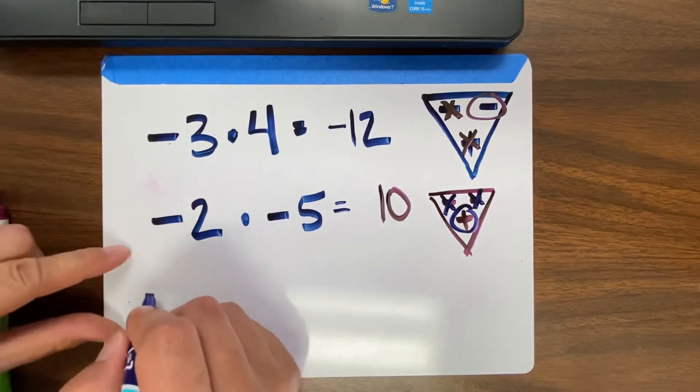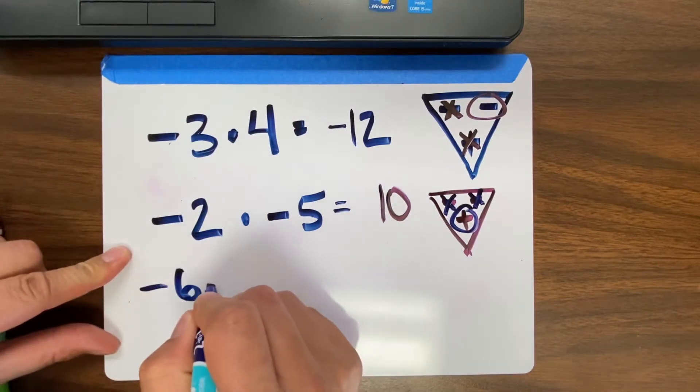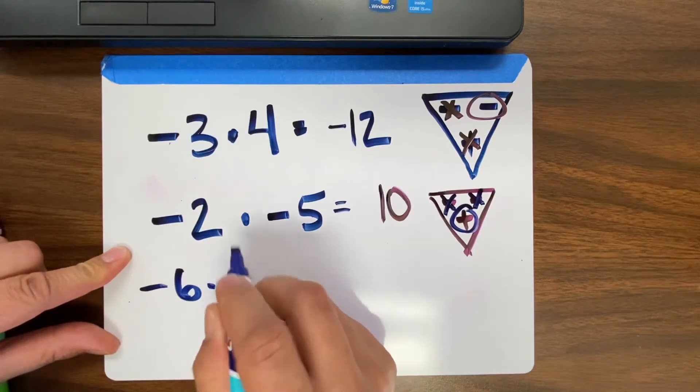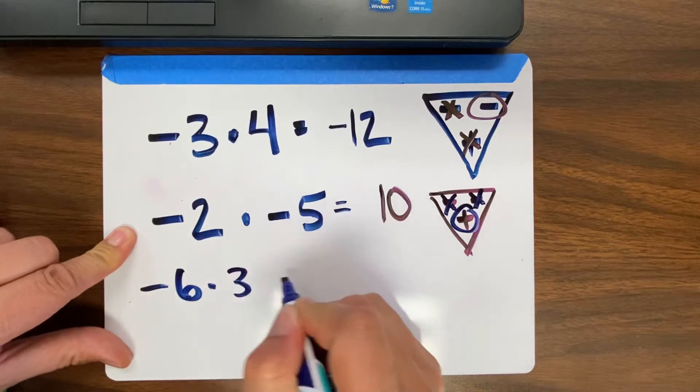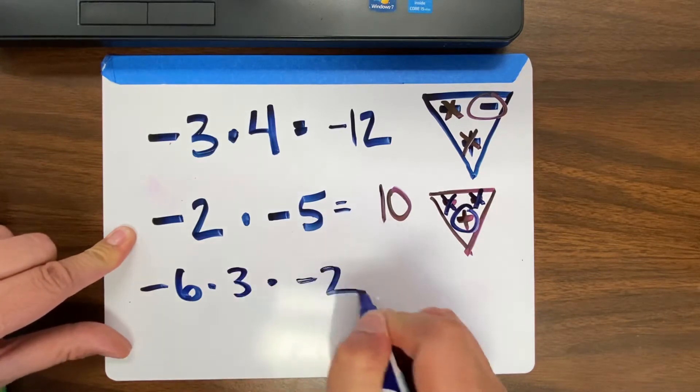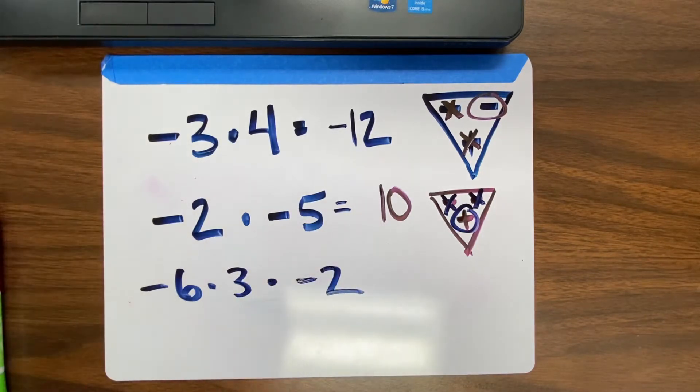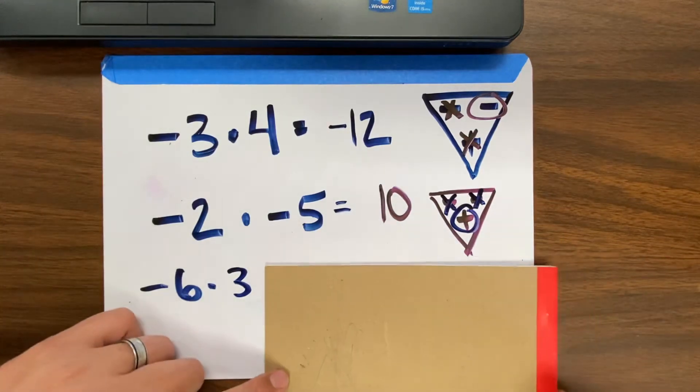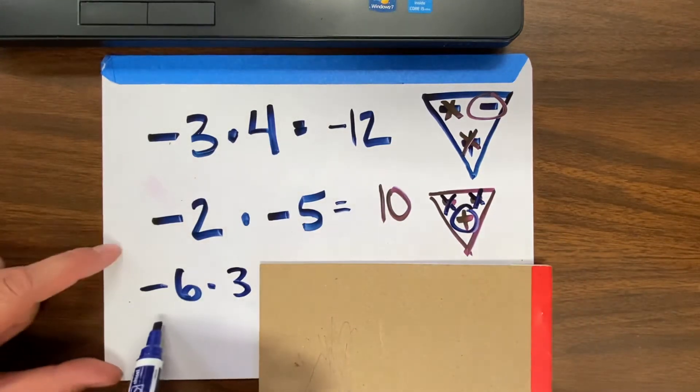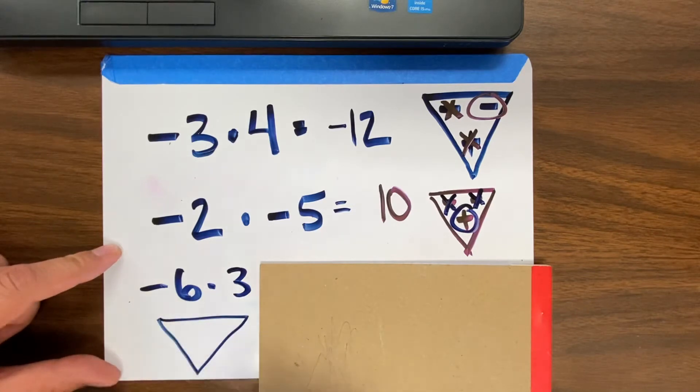If I had three numbers, negative 6 times, I better not use 1. Let's say 3 times negative 2. Now the difference is I have three terms. So I can't use the triangle in the same way, but I still can. Multiplication doesn't matter what order you do it in. Let's just say I cover this one up for right now. Now I could use the triangle because there's only two.